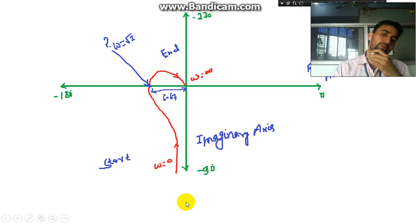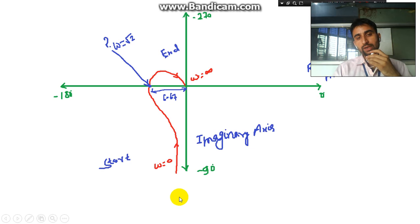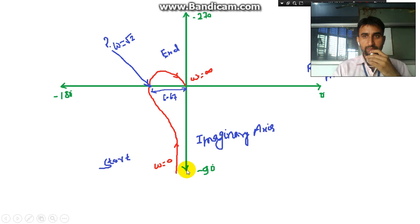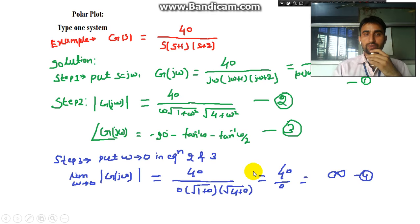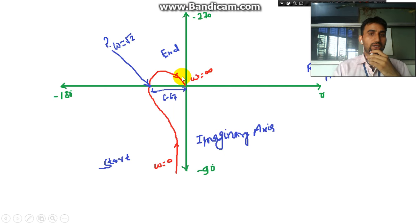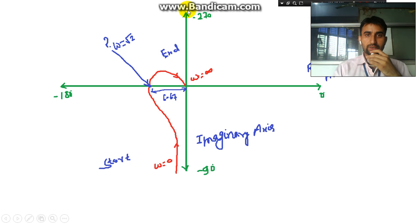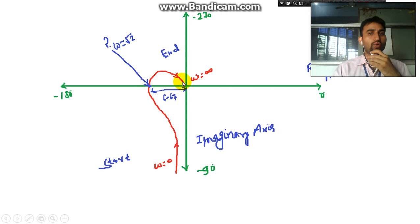The graph starts at phase −90° at infinity — meaning it begins far along the −90° axis, parallel to it. It then curves and ends at magnitude zero at −270°. The plot will always cross the −180° axis and proceed to −270°, but it will not cross the −270° axis.